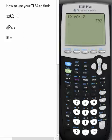792. So the answer is 792. Meaning, there are 792 different ways of selecting 7 people out of a group of 12.